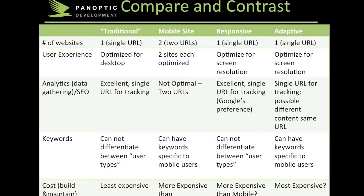With regards to which costs more, a traditional website is going to cost the least amount to build and maintain. With the other three, it's kind of a toss-up — it's like when you buy a car. You can buy the least expensive car to buy, but it may have very high maintenance costs, so the overall cost of ownership could be more than a more expensive car with less maintenance. When thinking about the cost of building a website, you need to look at not only the initial cost but also the cost to maintain it. Probably a mobile site is going to be most expensive because you're maintaining two different sites, but it really depends on how many changes you make and what your maintenance costs are.